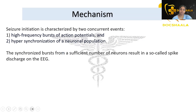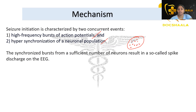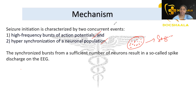Regarding mechanisms: there are two types. High-frequency bursts of action potentials, or hypersynchronization of a neuronal population — neuronal bursts get synchronized at a specific area in the brain and produce seizure activity. The synchronized burst from a sufficient number of neurons results in a spike discharge on an electroencephalogram or EEG.